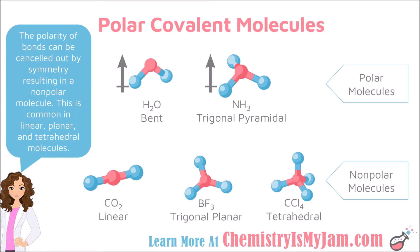When you look at a structure, keep an eye out for three shapes: linear, trigonal planar, and tetrahedral — these shapes will very often cause polarity to be canceled out, but only when the outside atoms are identical. When determining if a molecule is polar, first look for polar bonds. If there are no polar bonds, the molecule is not polar. However, if there are polar bonds, you may have a polar molecule. The second thing to look for is symmetry — a linear, trigonal planar, or tetrahedral shape will cancel out the polarity of the bonds.